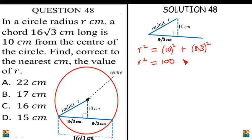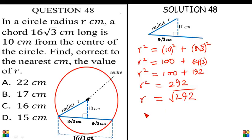10 times 10 is 100, plus 8² is 64, and √3 squared is 3. That's √3 times √3. So this becomes 100 plus 192. R² is now equal to 292, and R will now be the square root of 292.